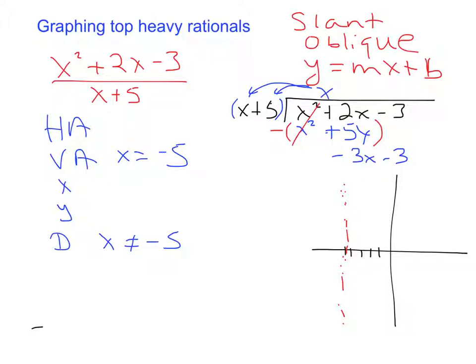So I ask myself, what do I have to multiply x by to turn it into a negative 3x? Well, that's going to be negative 3, right? Because negative 3 times x is going to give me that negative 3x. So the good news is, I can stop at this point.